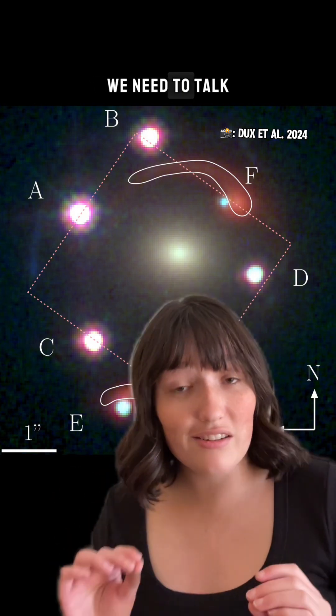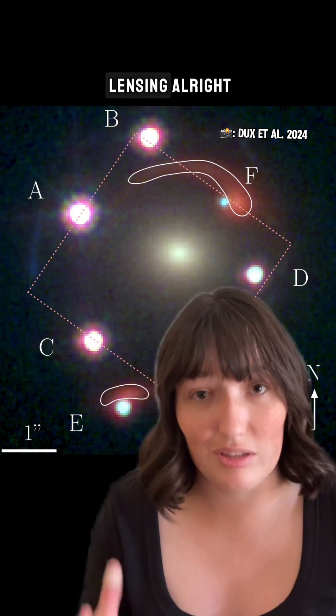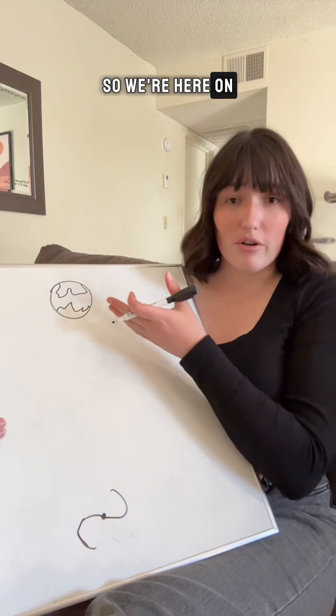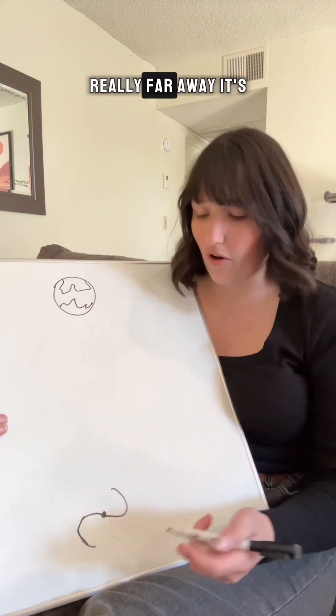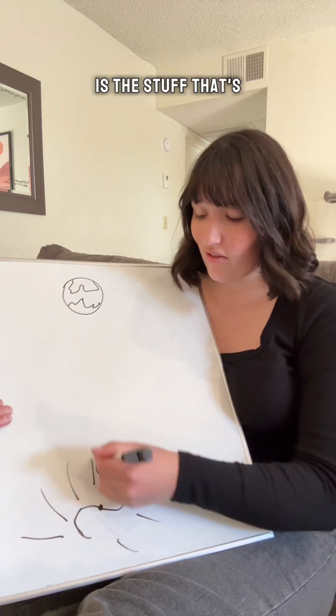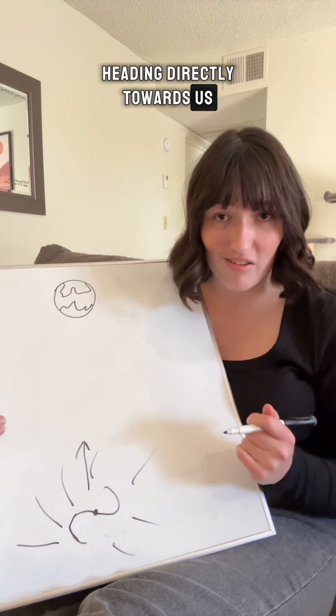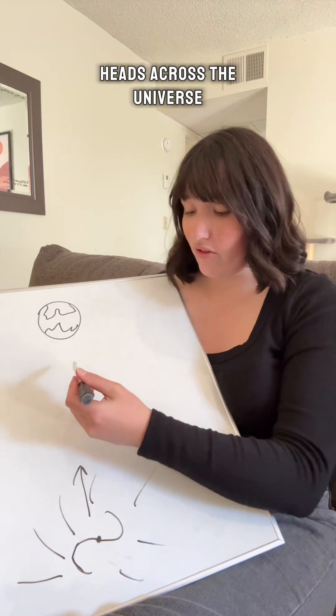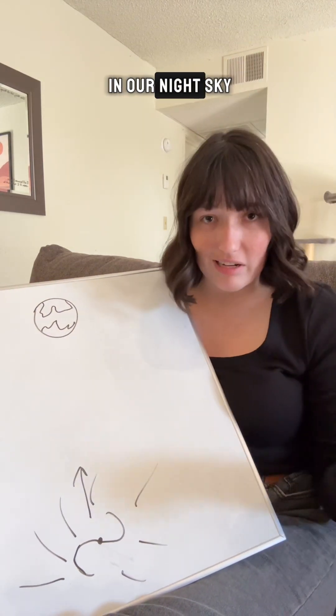To understand why, we need to talk about something called gravitational lensing. Alright, so we're here on Earth, and there's some galaxy really far away. It's sending light out in all directions, but the only light from it we're actually going to see is the stuff that's heading directly towards us. Normally, that light just heads across the universe, and we see galaxies in our night sky.